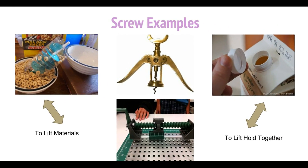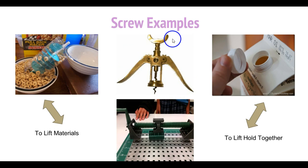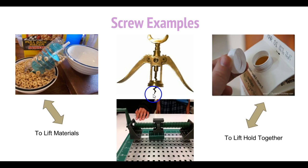Now let's look at some different types of screws. This right here is a screw that someone made — when you turn it, it's going to lift the cereal from this bowl and dump it out into the other bowl. You could also use something like this to extract water, moving water from a low area to a high area. Over here, this is a corkscrew. In bottles, wooden corks keep the liquid inside and airtight. You insert the corkscrew into the top of the bottle, turn it, and it goes into the wooden cork and pulls the cork up to open the bottle.